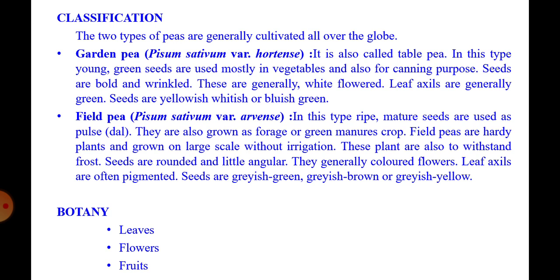Field pea plants are also able to withstand frost. Seeds are rounded and little angular. They have generally colored flowers. Leaf axils are often pigmented. Seeds are grayish green, grayish brown, or grayish yellow.